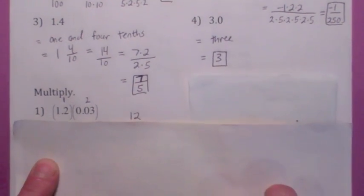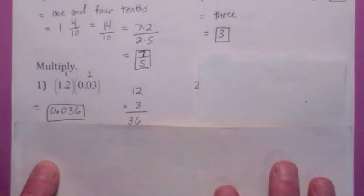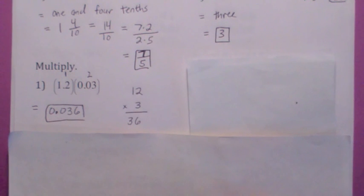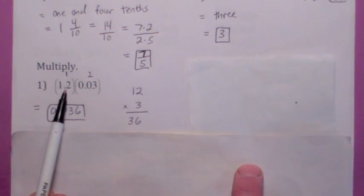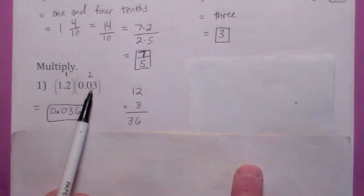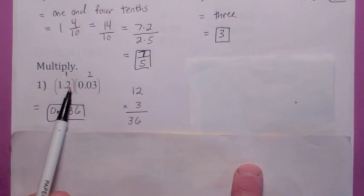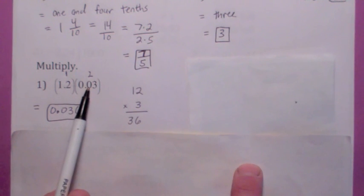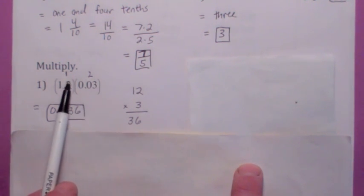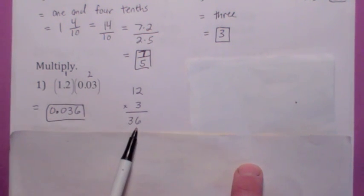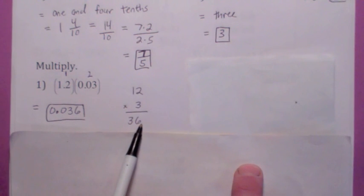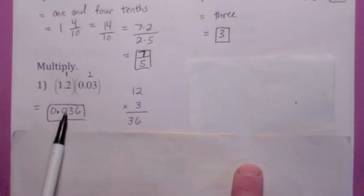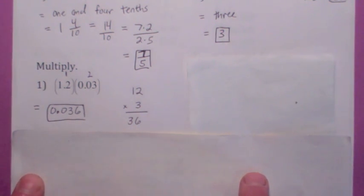Let's talk about how to multiply decimals — there's a nice trick to this. When you multiply decimals, you can at first just kind of ignore the decimal point. Pretend this is 12, pretend this is 3. When you pretend it's 12, you've moved the decimal over 1 to the right. When you pretend this is 3, you've moved the decimal 2 to the right — so you've moved the decimal 3 places total. To counterbalance that, move it back 3 places to the left. 1, 2, 3 — your answer is 0.036.